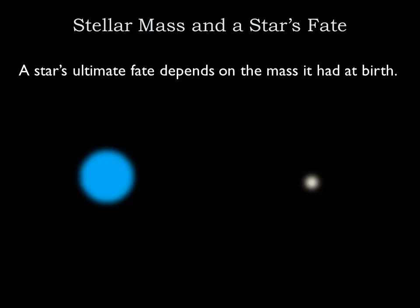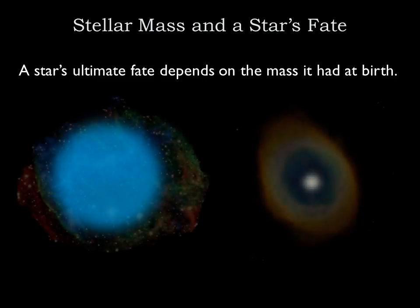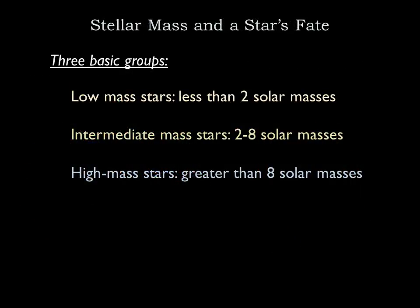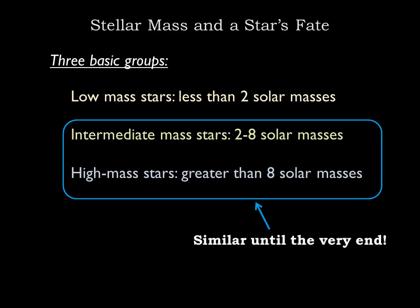Even at the end of its life, when a star runs out of its last bit of fuel and can no longer fuse anything, the star's fate will depend on the mass it had at birth. We can divide stars into three basic groups by mass: low mass stars born with less than about 2 solar masses, intermediate mass stars with birth masses between about 2 and 8 solar masses, and high mass stars born with greater than about 8 solar masses. The life stages of intermediate and high mass stars are quite similar up until the very end of their lives.